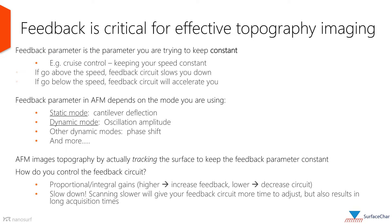AFM images topography by tracking the surface to keep the feedback parameter constant. The feedback loop operation is controlled by gain settings. The higher the gains, the more feedback. In case the feedback is insufficient, slower scans may solve the issue at the expense of taking more time.